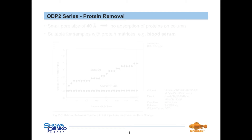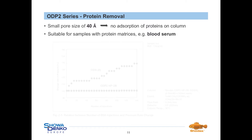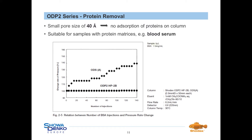Moreover, the ODP2 series has small pore sizes of 40 Ångström, making it suitable for protein removal. Samples with protein matrices, for example blood serum, can be directly injected without time-consuming sample pre-treatment. As a proof of suitability, a sample containing BSA, a protein of 60,000 Dalton, was injected into two new columns, ODP2 HP-2B and ODS-A. In the case of ODS-A, multi-layer adsorption of the protein was observed over 140 consecutive injections, resulting in significantly higher column back pressure, requiring column exchange. In the case of our ODP2 HP-2B column, back pressure was quite stable over 140 injections, showing that no adsorption is taking place on the polymeric material.